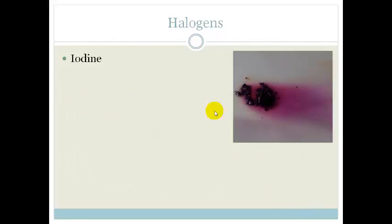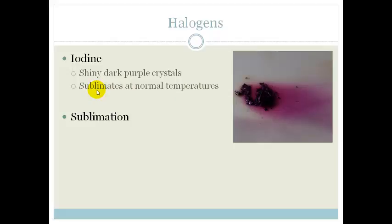Continuing on with the halogens, let's look at iodine. You can see from this picture that iodine is shiny dark purple crystals. It sublimates at normal temperatures. What does sublimate mean? It means it goes straight from a solid to a gas. It skips the liquid phase entirely.